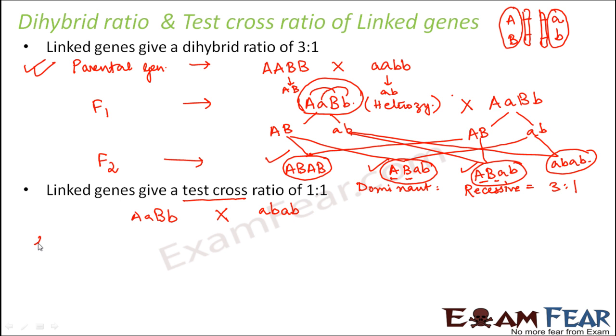So what would be the possible gametes in this case? So let us try to find out. Here there will be 2 possible gametes that is AB and AB. Again you cannot get more gametes because they are linked. In this case just 1 gamete is possible and that is AB. So what are the possible combinations that you can get as a result of this test cross?